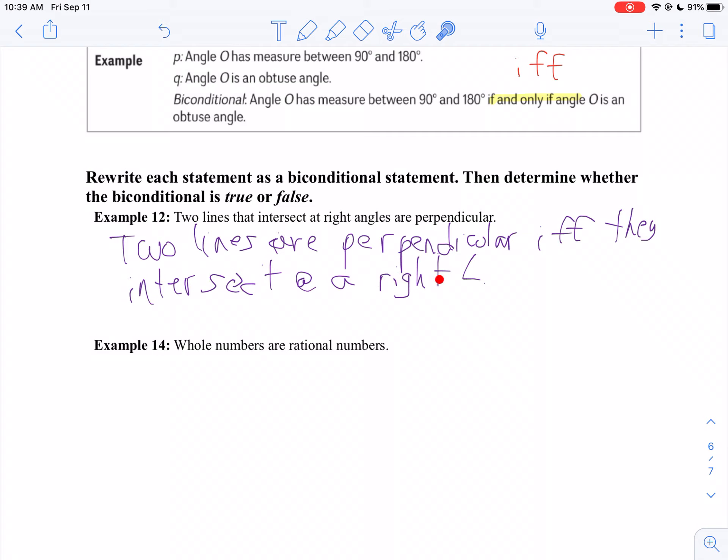Yes. If two lines intersect at a right angle, must they be perpendicular? That statement is true.